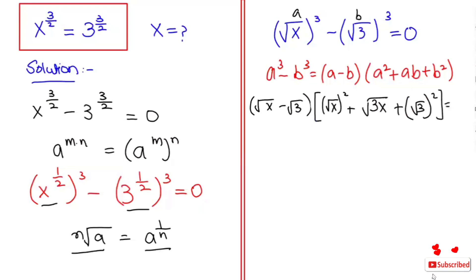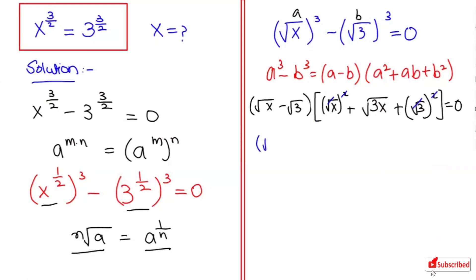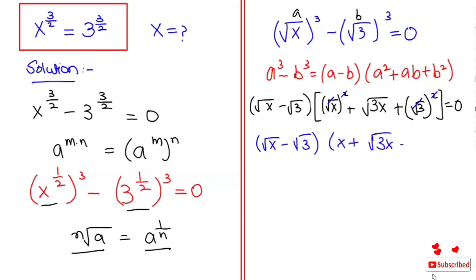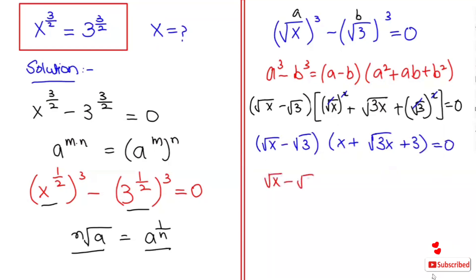So the expression we get is root x minus root 3 times x plus root 3x plus 3 is equal to 0. I have to get the two cases, so case one: root x minus root 3 is equal to 0. I am going to take root 3 to the right hand side so it will turn to positive root 3.